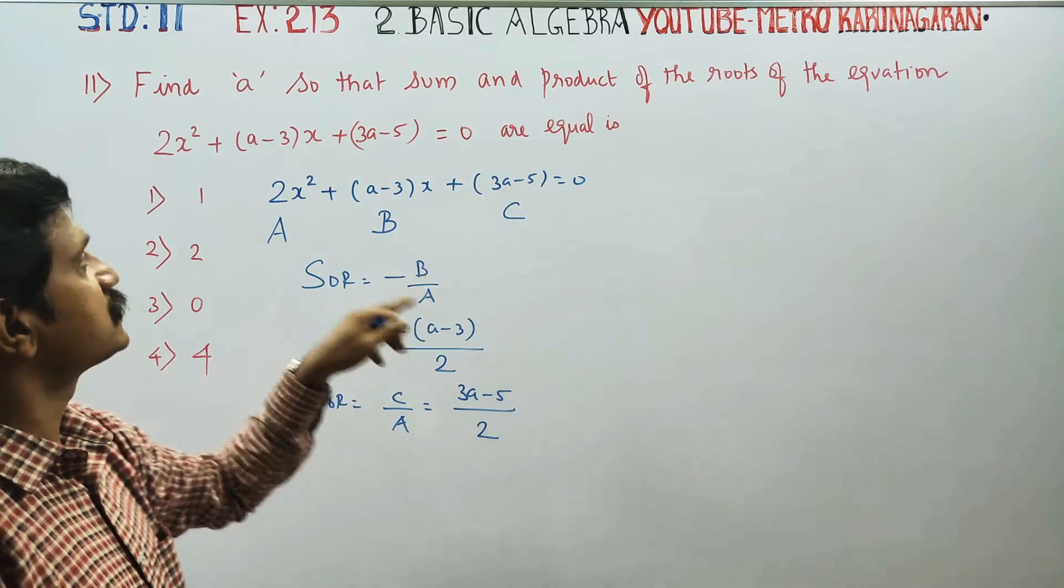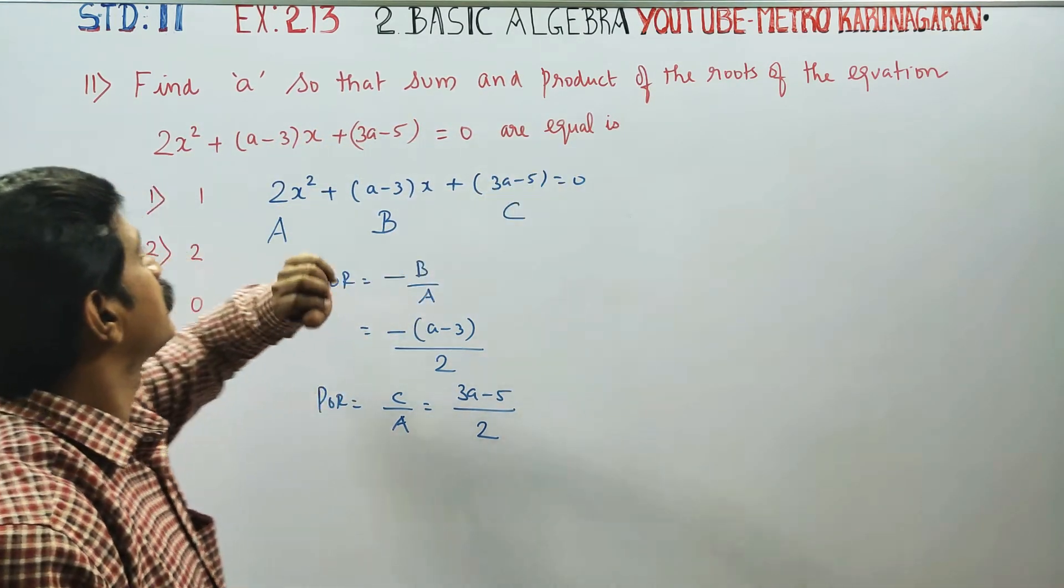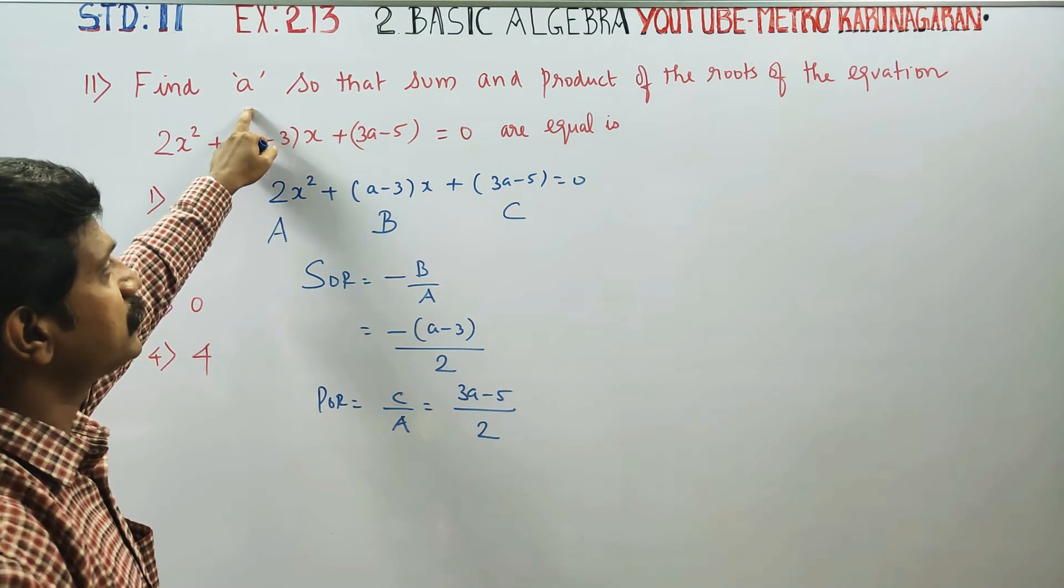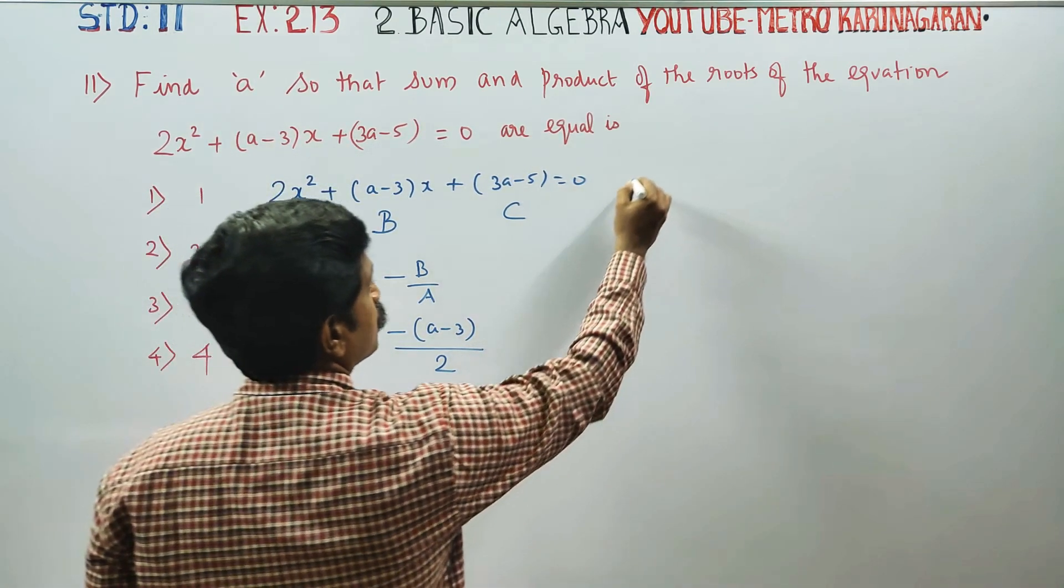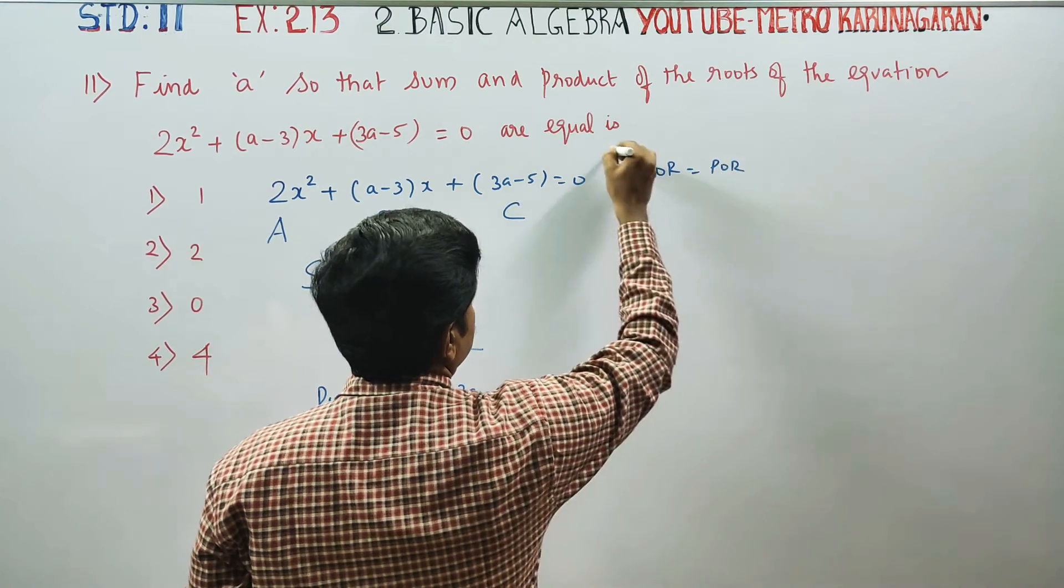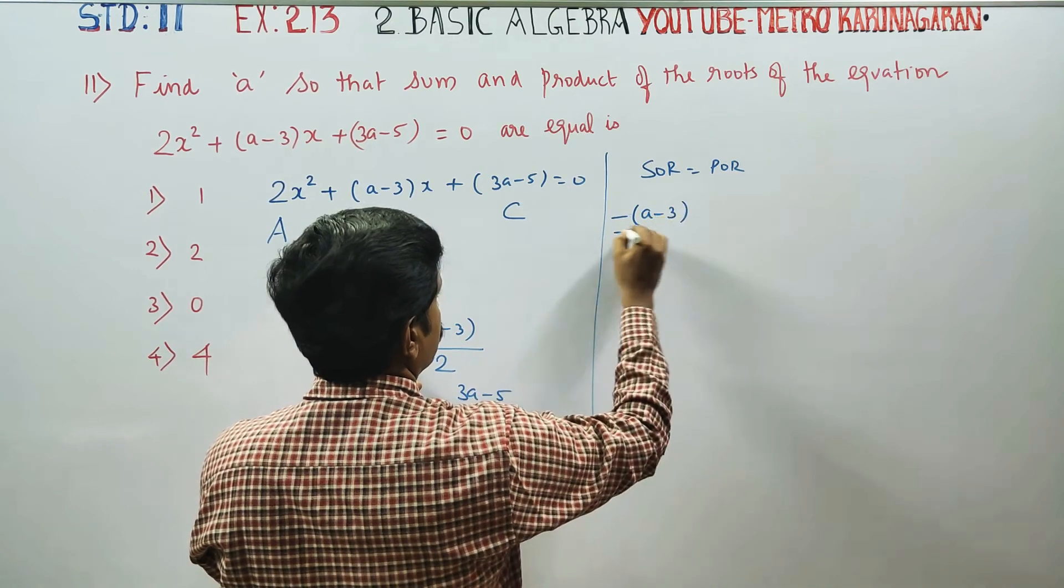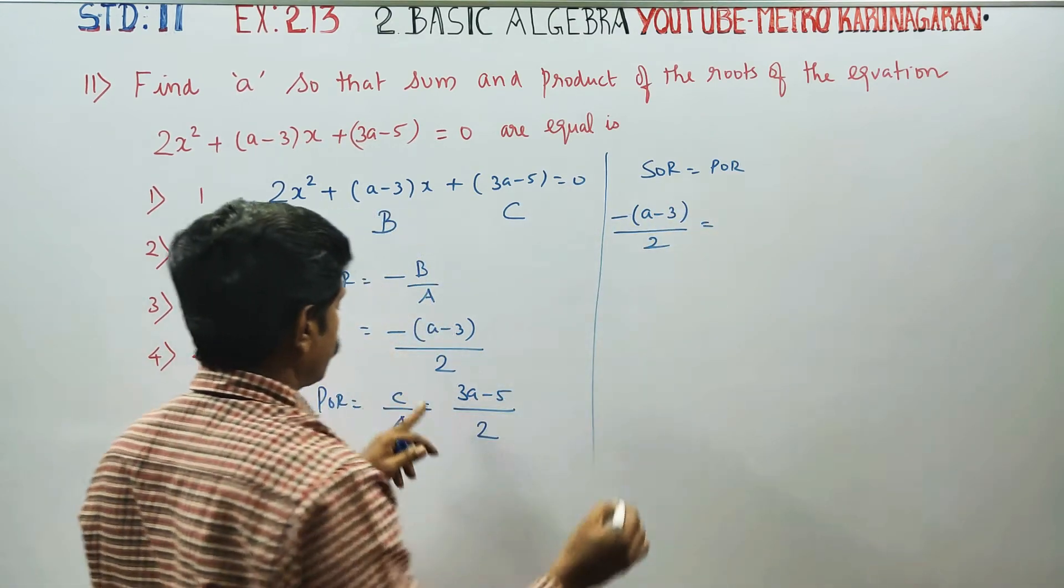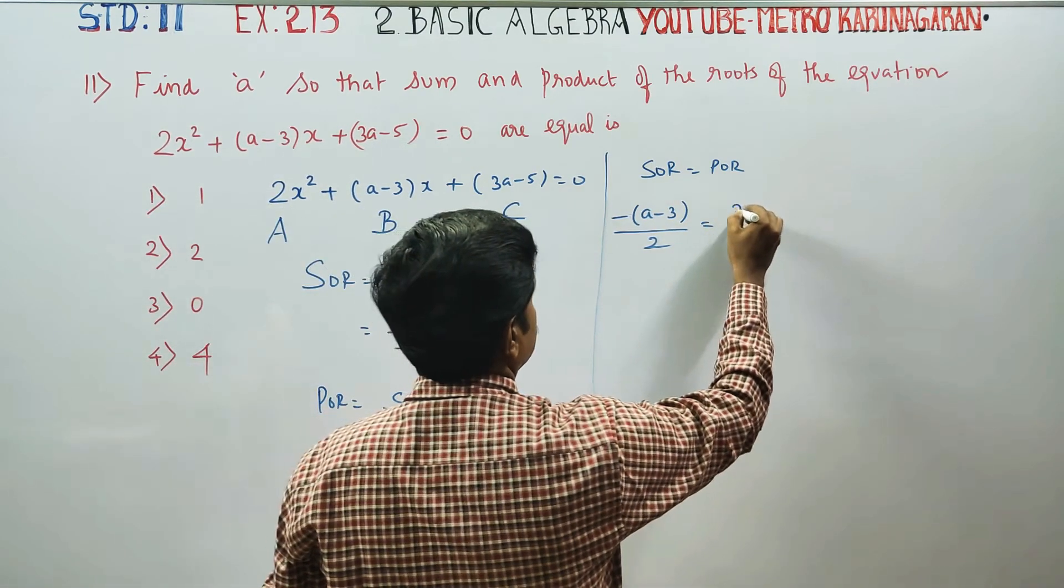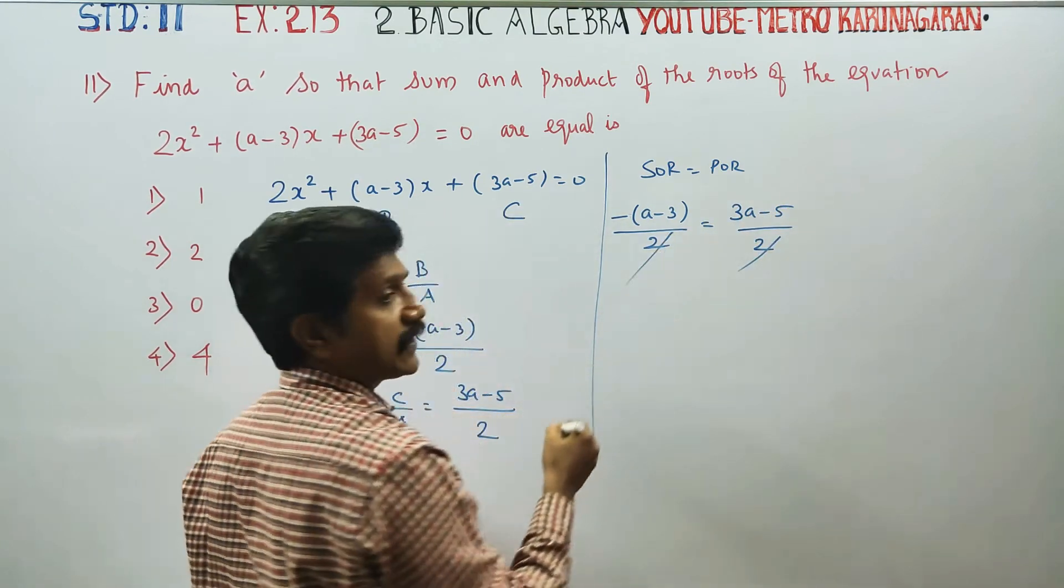Sum of the roots and product of the roots are equal. Setting them equal: (-A+3)/2 = (3A-5)/2. Canceling 2 from both sides.